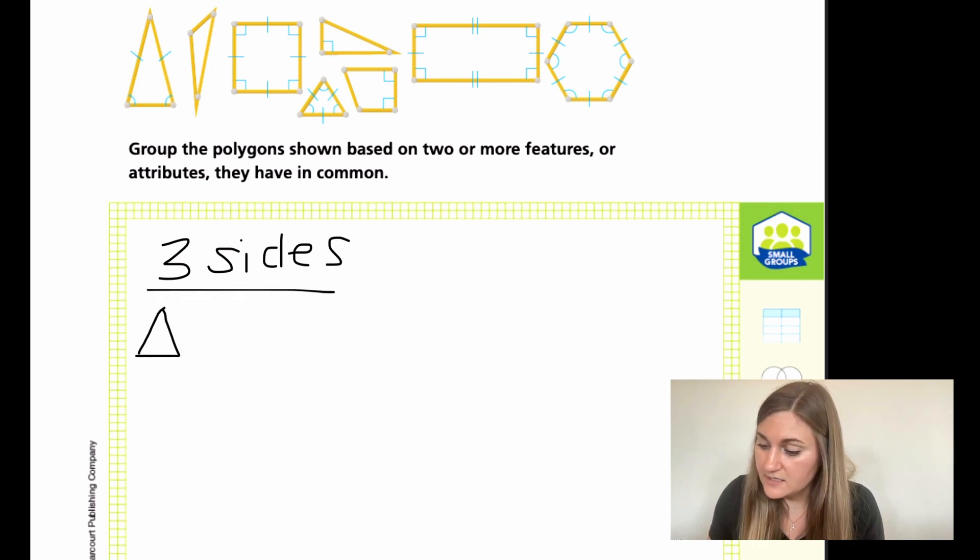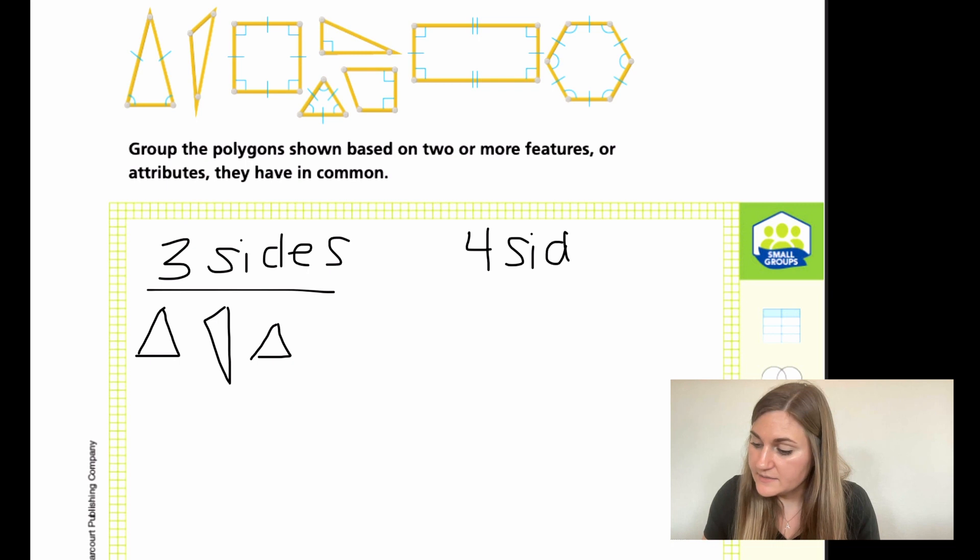So three sides, that is going to be all my different triangles. So I have a triangle that looks like this, one that looks like this, and one that looks like this. All right. Then I have my four sides and those are my squares. Oh, and I also have a series triangle that looks like that.